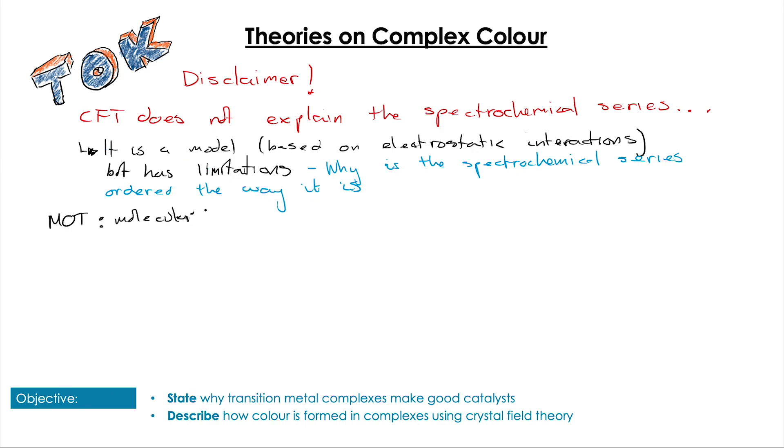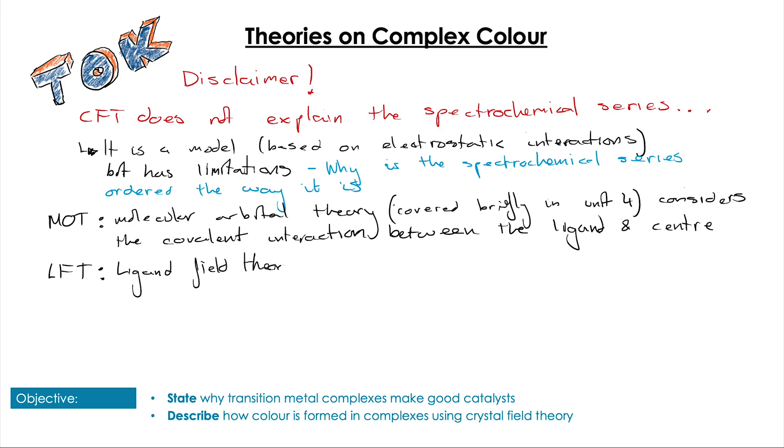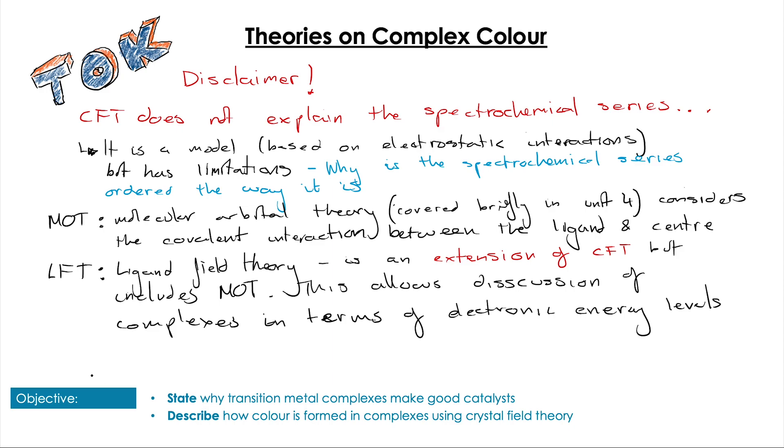It is a model that's based on electrostatic interactions, which makes it perfect for us at the IB, but it has limitations—specifically, it doesn't explain why the spectrochemical series is in the order that it is. Other theories can have other uses, such as molecular orbital theory, which considers the covalent interaction between the central ion and the ligands. Ligand field theory—probably one of the most prevalent theories—is an extension of crystal field theory but includes molecular orbital theory. This allows discussion of the ligand-metal interaction to be put in terms of electronic energy levels and can help us explain the spectrochemical series more accurately.